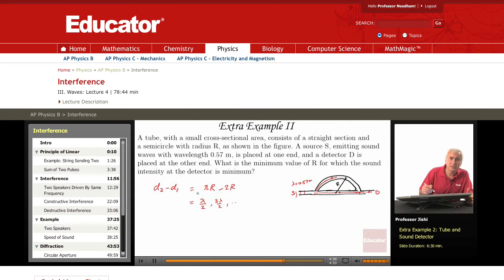So to get destructive interference, I need this path difference, which is R times (pi minus 2), to be either lambda over 2 or 3 lambda over 2. So to get the minimum value of R, I take it to be lambda over 2. If I take it 3 lambda over 2, that would be a larger value. So R is lambda over 2, which means R is lambda over 2 divided by (pi minus 2).